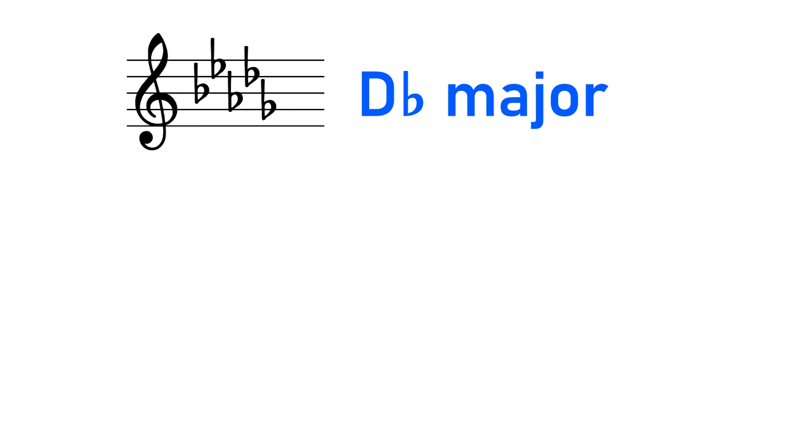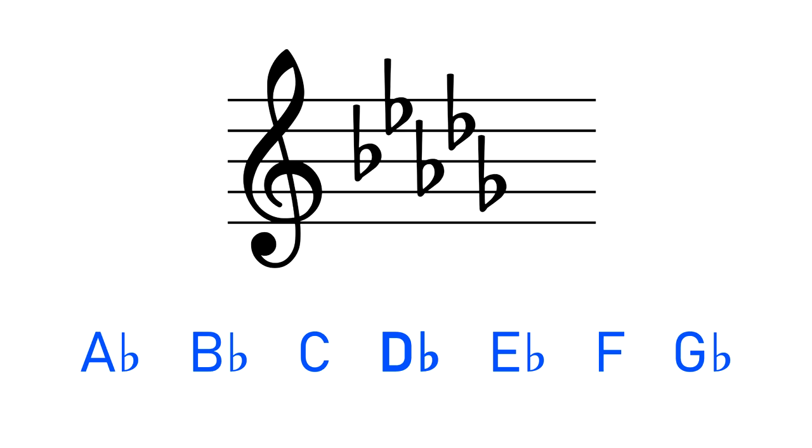But of course, it's important to remember that even though most songs using a 5 flat key signature will be in Db major, the song could also be in one of the modes of Db major, like Bb minor or Ab Mixolydian. The key signature will always tell you which notes a song is going to use, but it won't necessarily tell you which one of those notes is the tonic note.